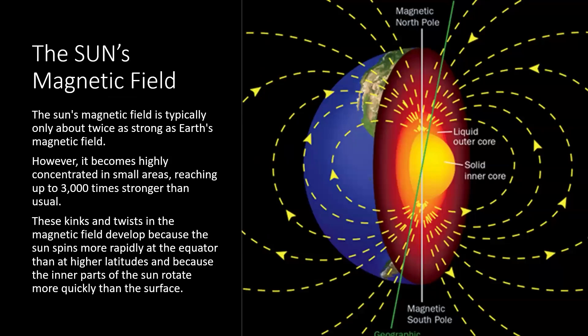Now we'll cover a bit of the sun's magnetic field. The sun's magnetic field is typically only about twice as strong as Earth's magnetic field. However, it becomes highly concentrated in small areas, reaching up to 3000 times stronger than usual. These kinks and twists in the magnetic field develop because the sun spins more rapidly at the equator than at higher latitudes and because the inner parts of the sun rotate more quickly than the surface. So you've got two kinds of tensions going on: the tension created by the rotation of the sun itself, and the magnetic field varying because the equator spins faster than the poles.